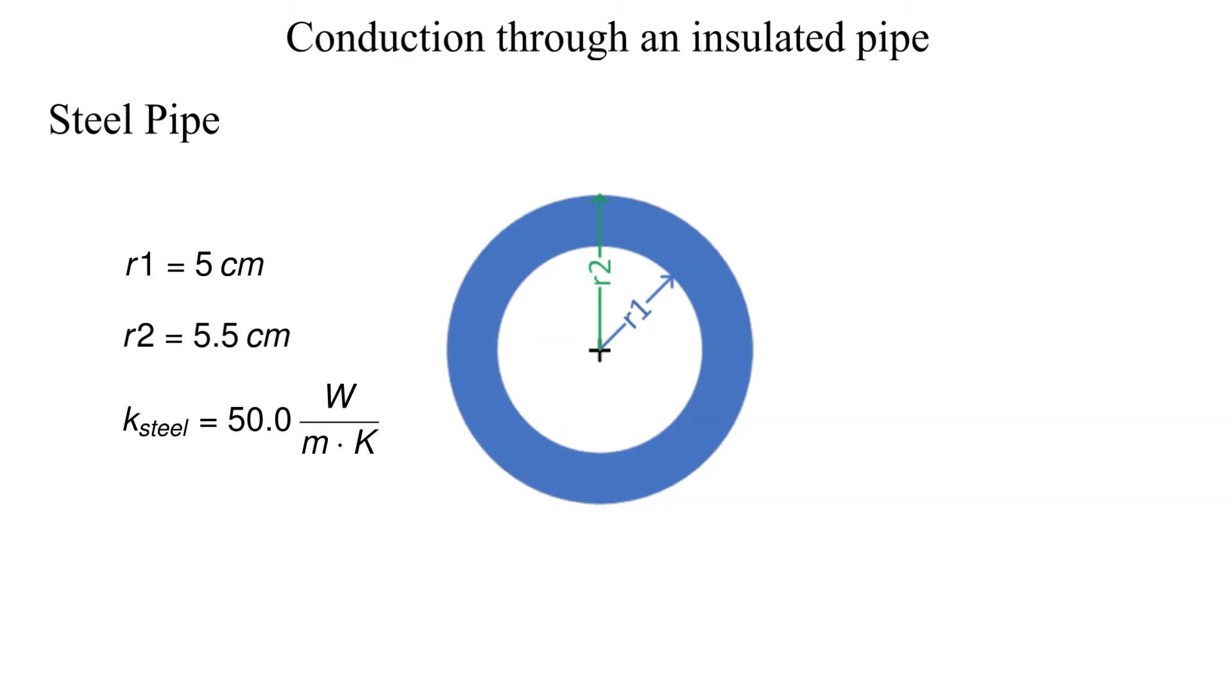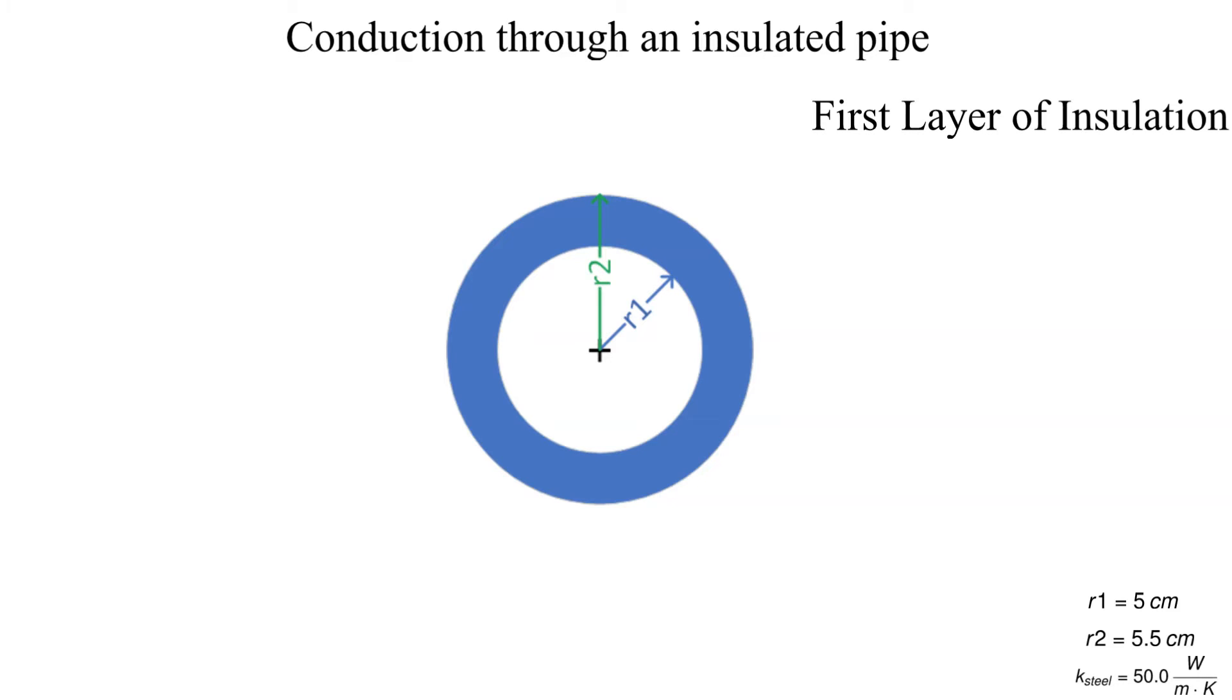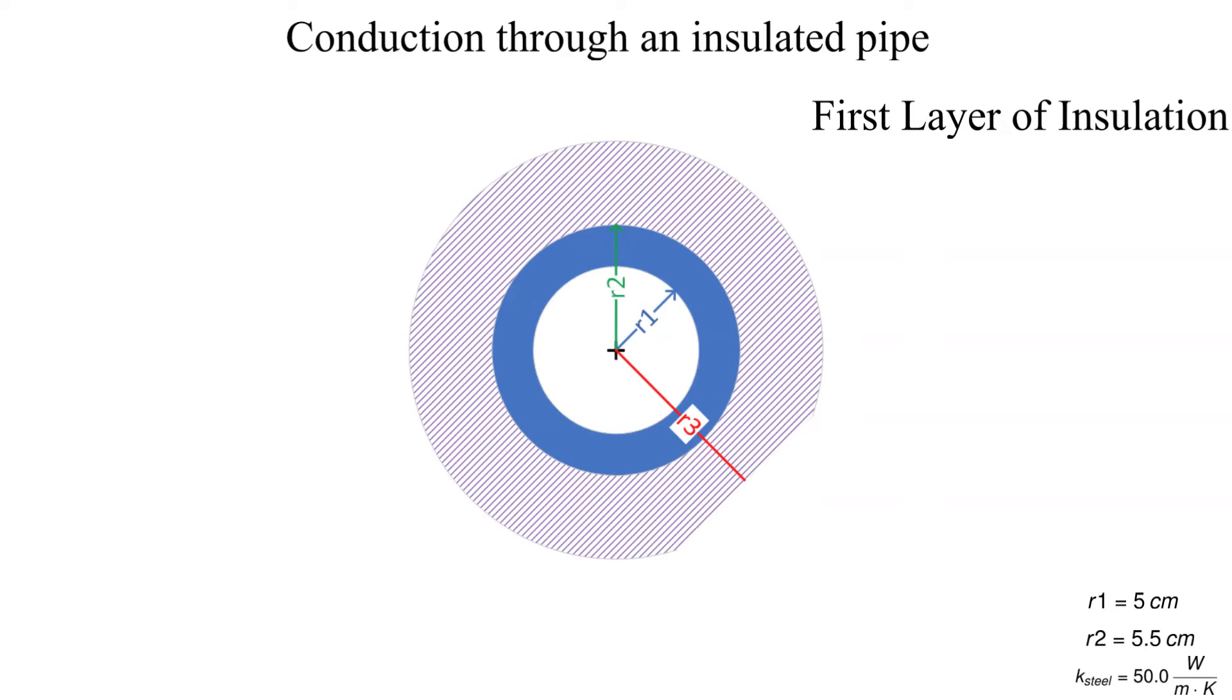Let's add the first layer of insulation to the steel pipe. Note that the outer radius of the steel pipe is the inner radius of the insulation. The outer radius and the conductivity of the insulation are provided.